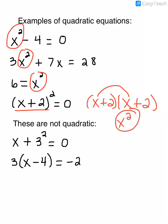Below are some examples of equations that are not quadratic. For example, x plus 3 squared equals 0 — there's a square in it, but it's not an x squared, so the variable has to be squared. And in the last one, if I were to distribute the 3 into the parentheses, that would give me 3x minus 12 equals negative 2, and again, there is no x squared.